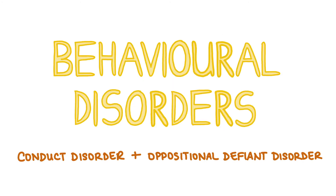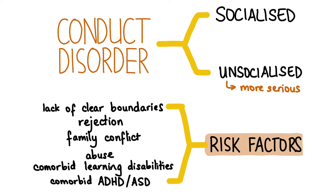Now let's move on to behavioral disorders. Conduct disorder is defined as a repetitive and prolonged pattern of antisocial behaviors which are outside social norms. There are two subtypes: socialized and unsocialized. Socialized is less serious; it's phasic and the child often shares their antisocial behaviors like truancy from school and stealing with their peer groups. Unsocialized is more serious because it leads to criminality and antisocial personality disorder eventually. These children tend to be rejected by their peer group. Risk factors include lack of clear boundaries, rejection, family conflict, child abuse, comorbid learning disabilities or learning difficulties and neurodevelopmental conditions. 50% of children with ADHD have conduct disorder too.